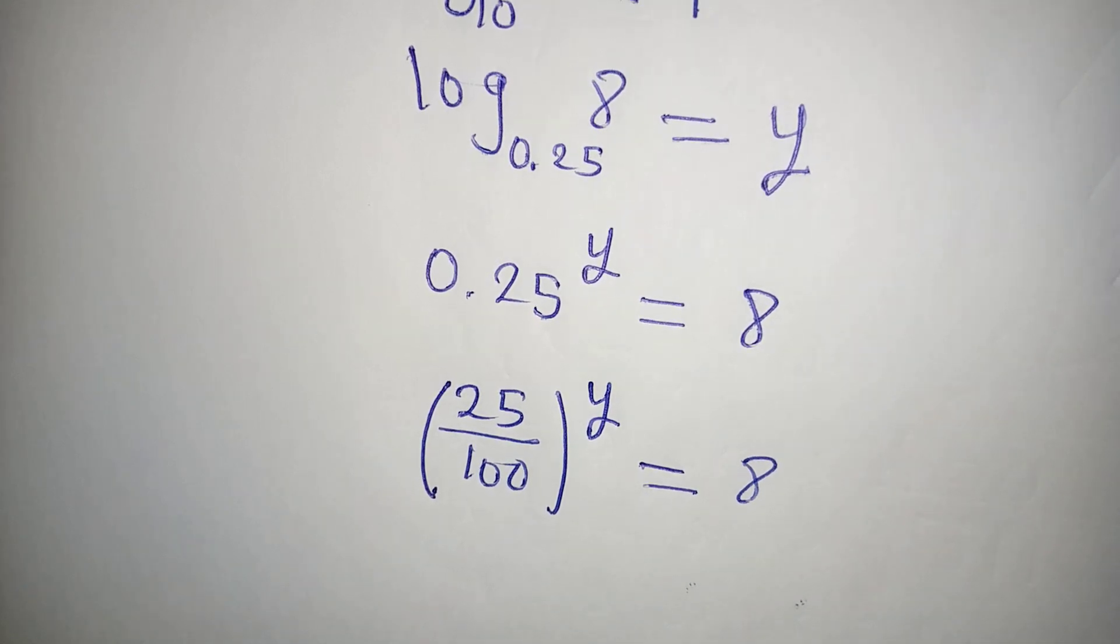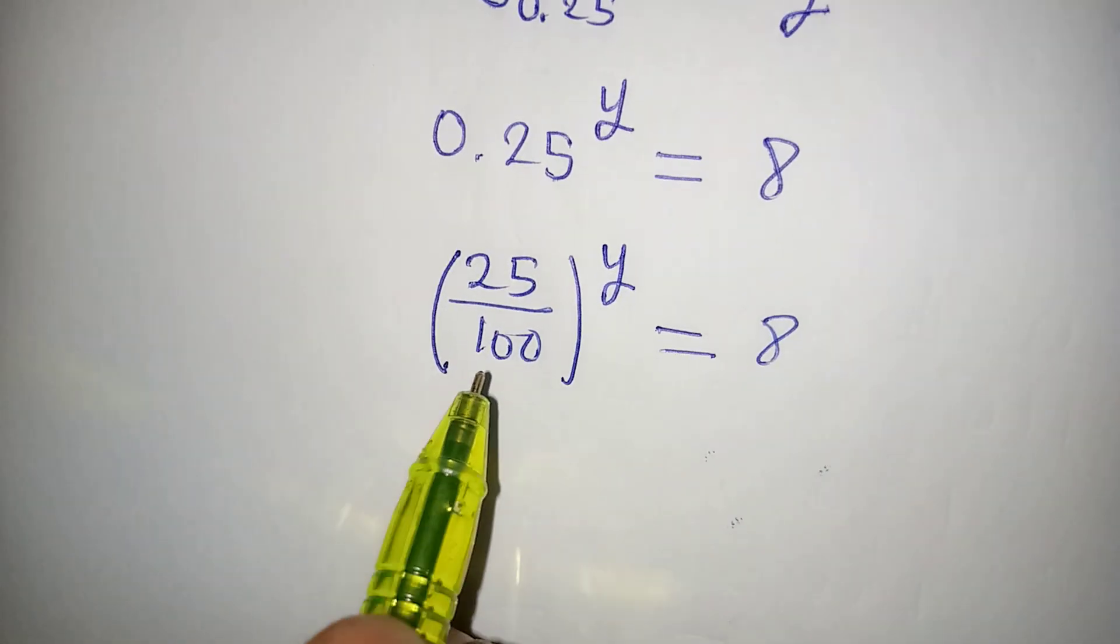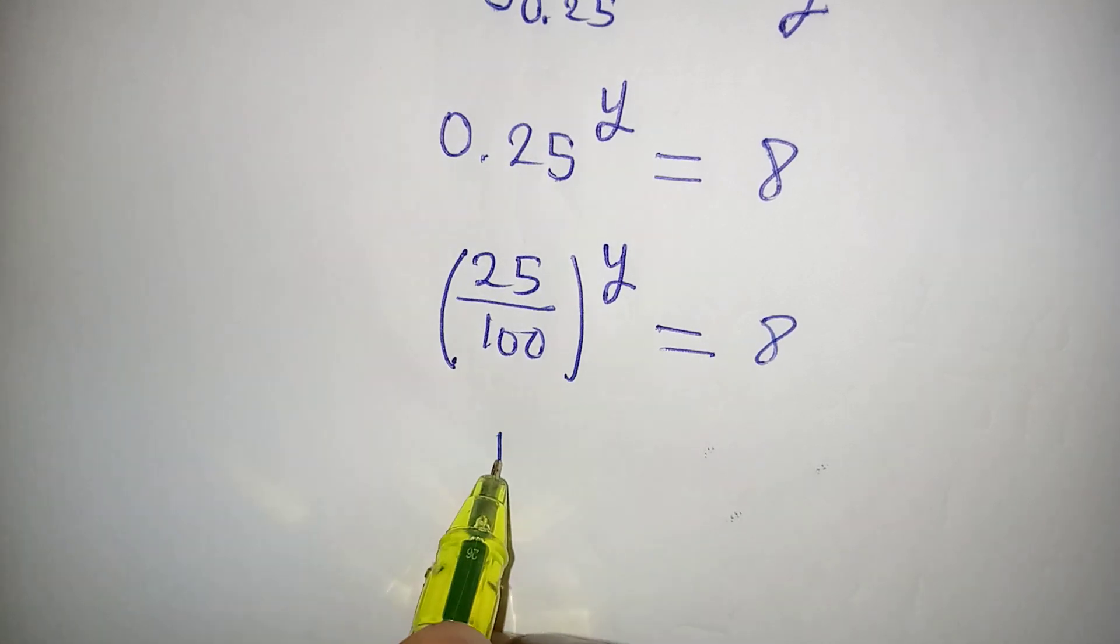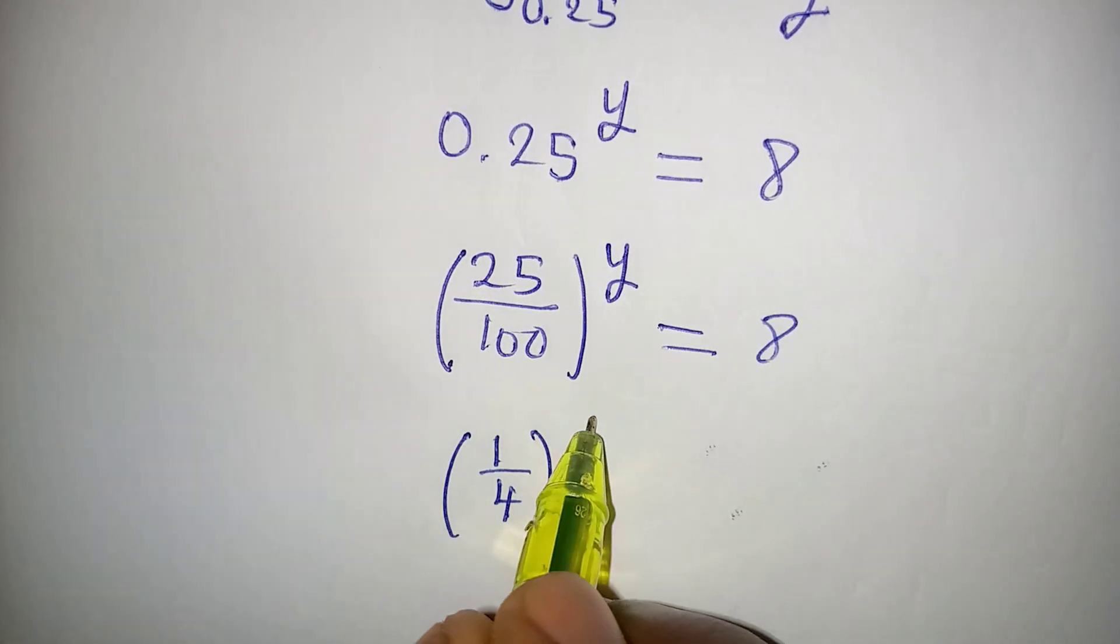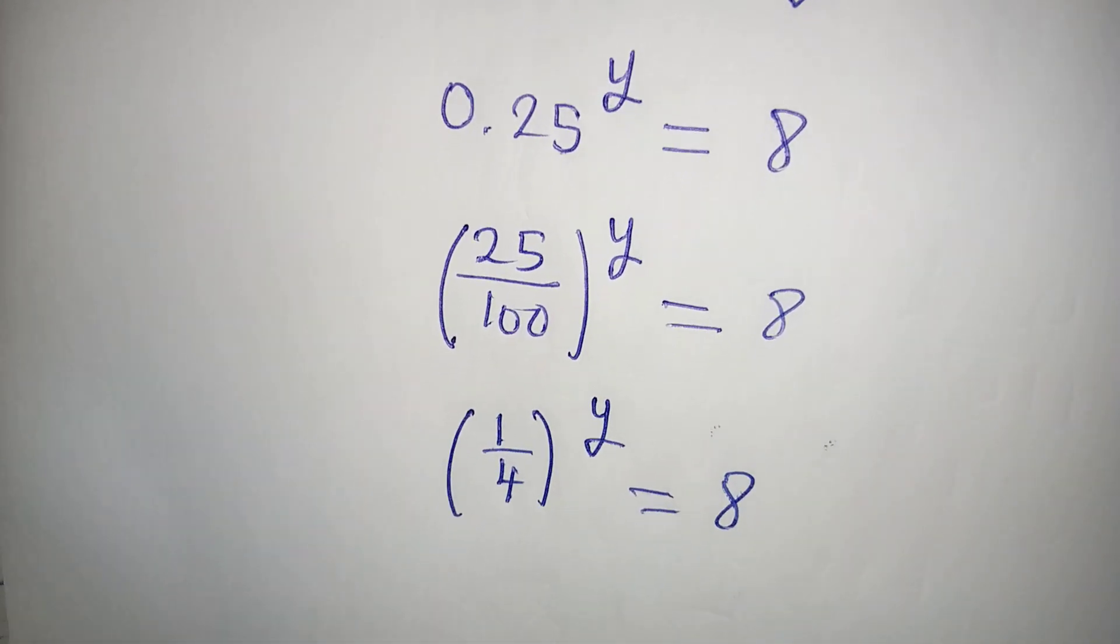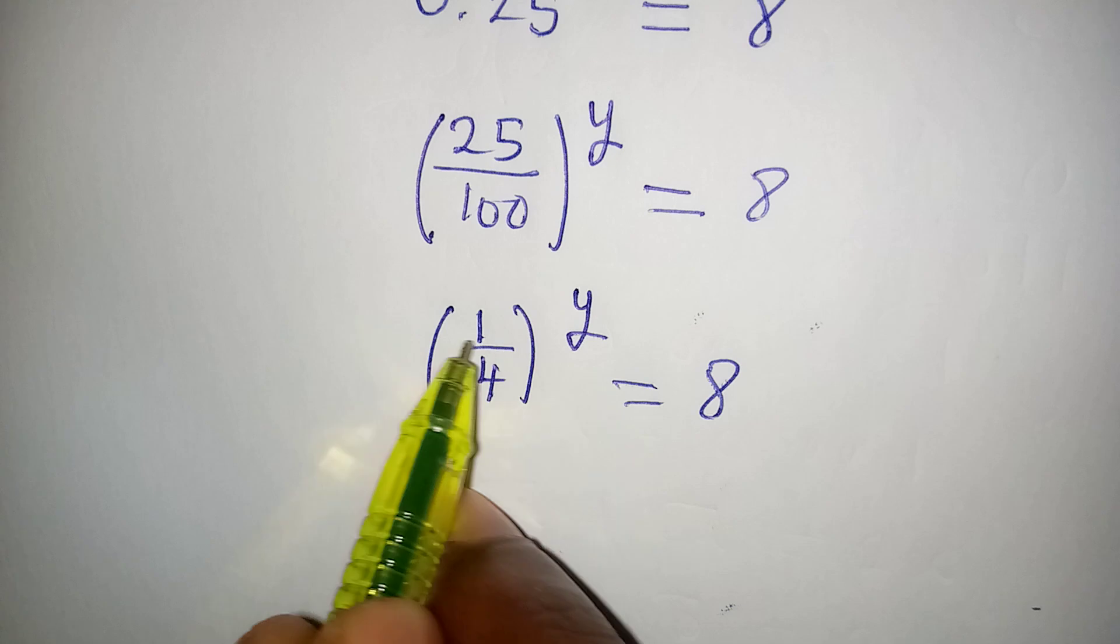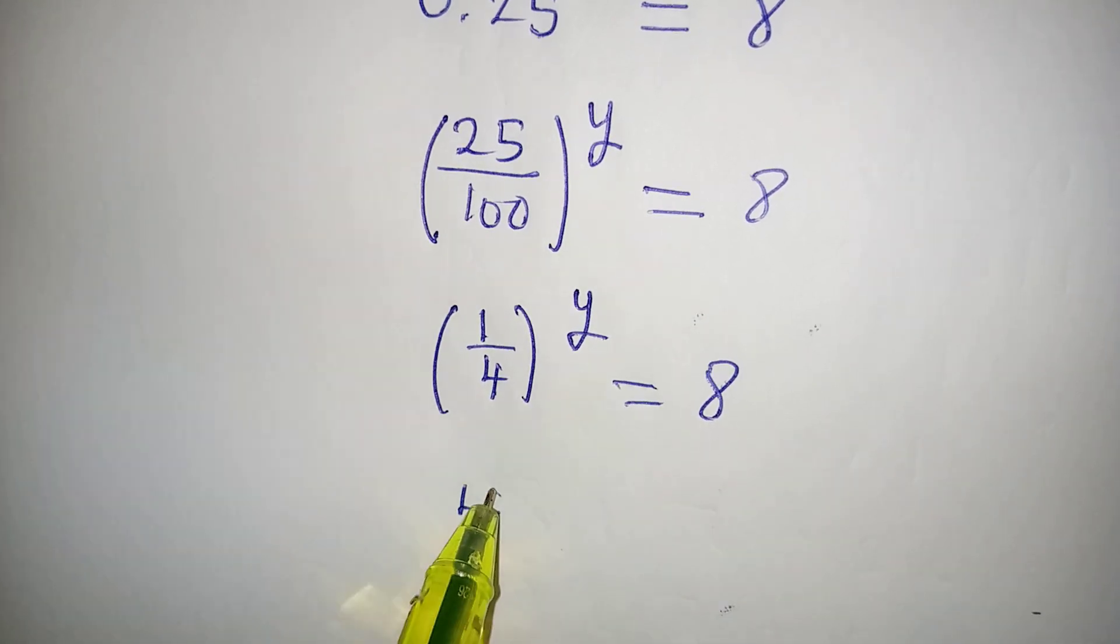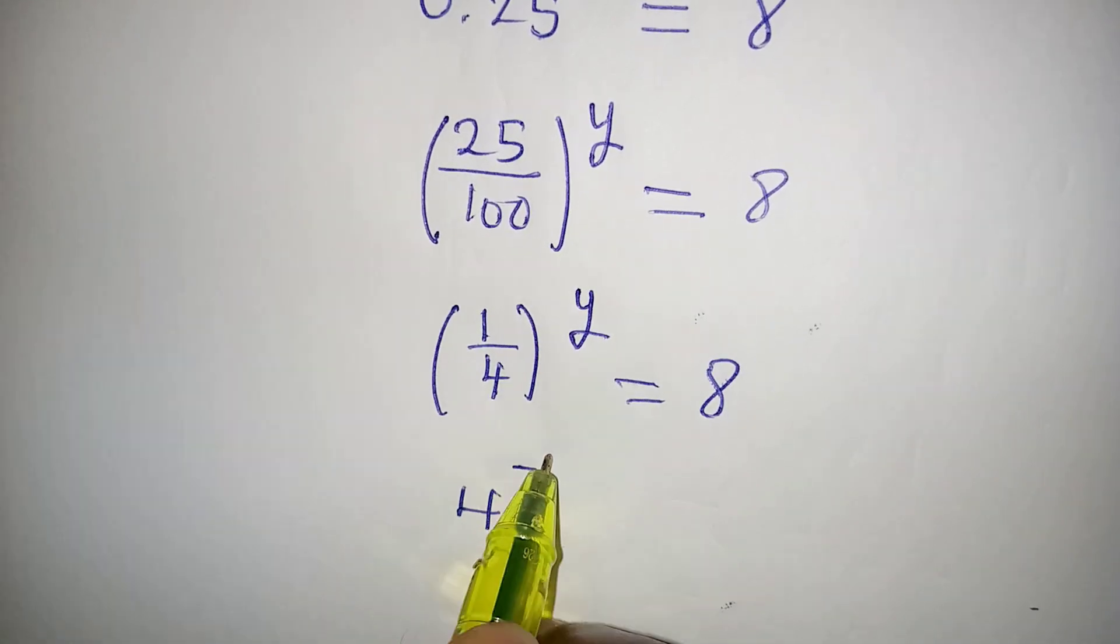Now remember, 25 over 100 is 1 over 4, and this is to the power of y which is equal to 8. And from here, let's remove this fraction as we have 4 to the power of negative 1, then to the power of y, which is equal to 8.